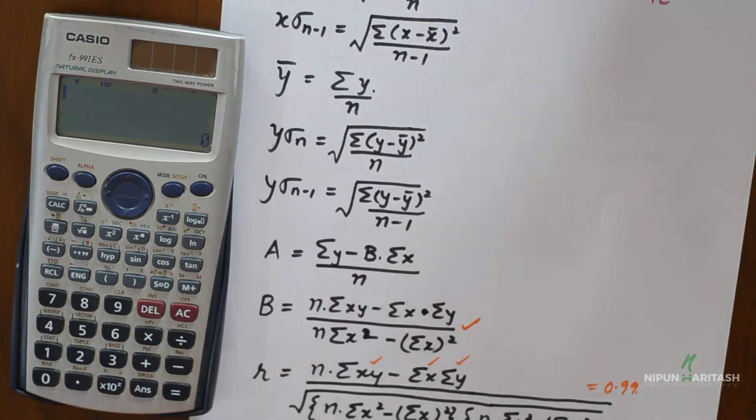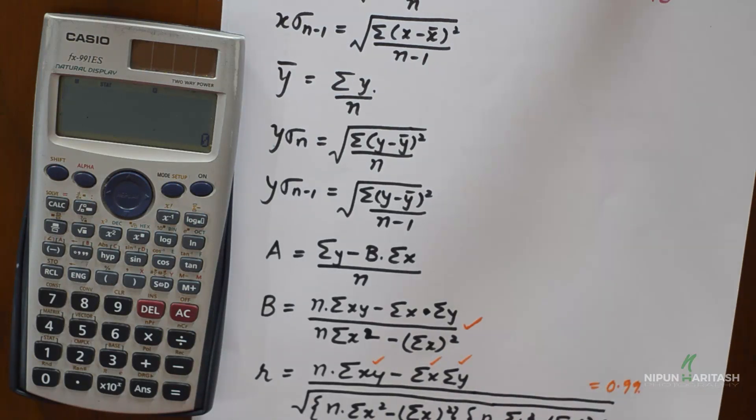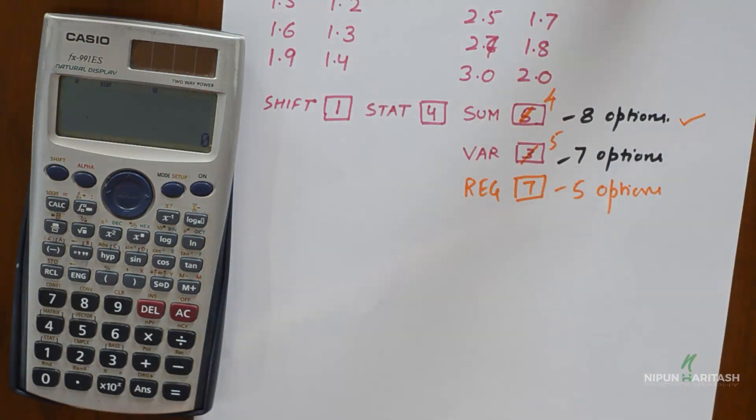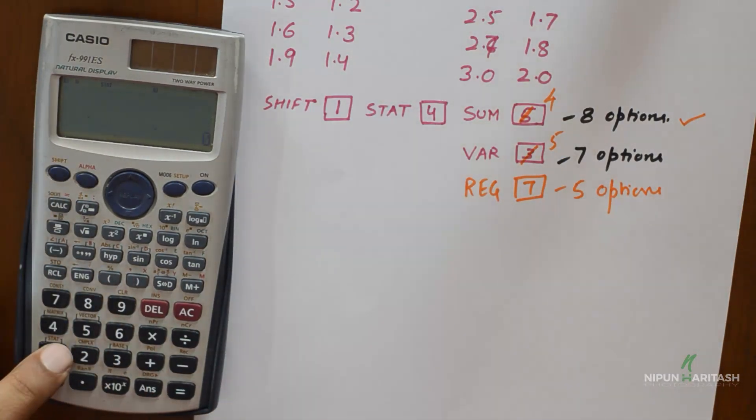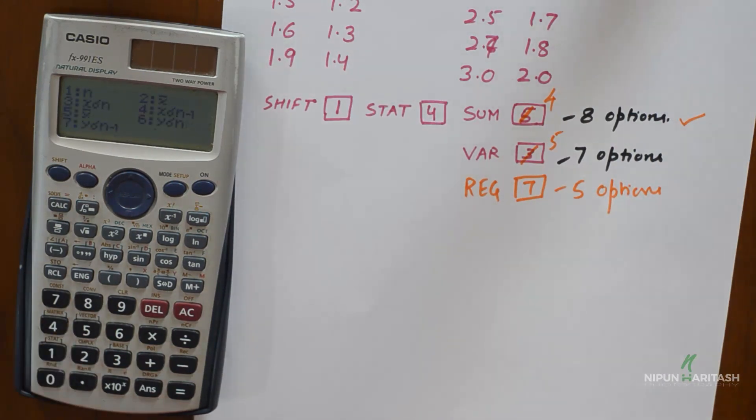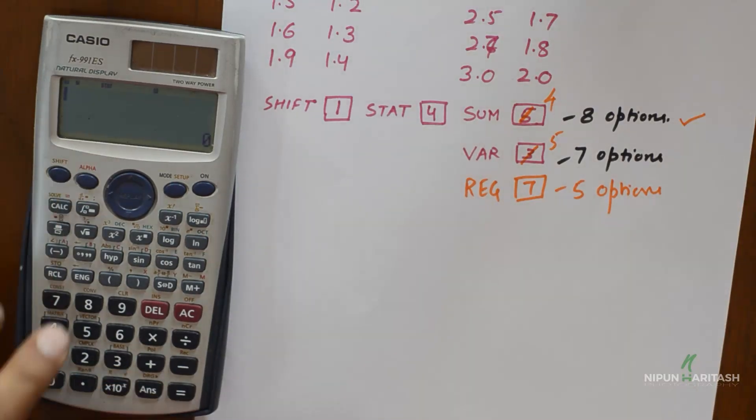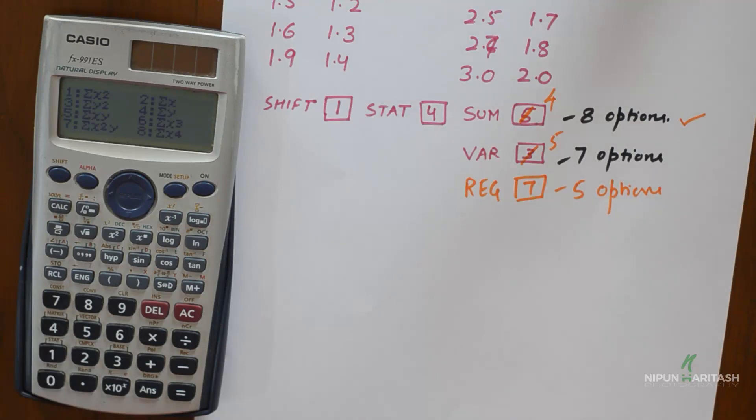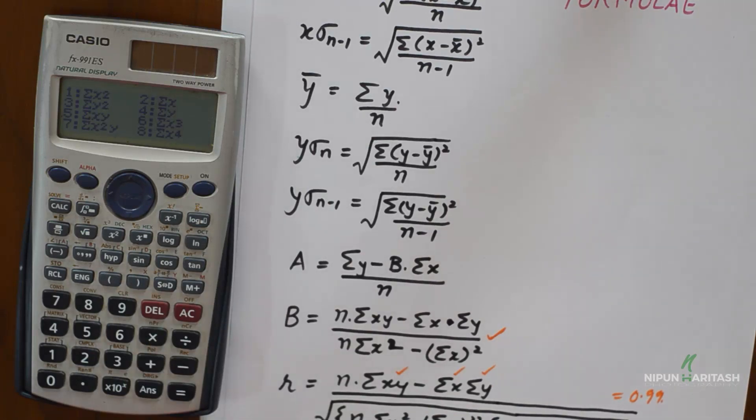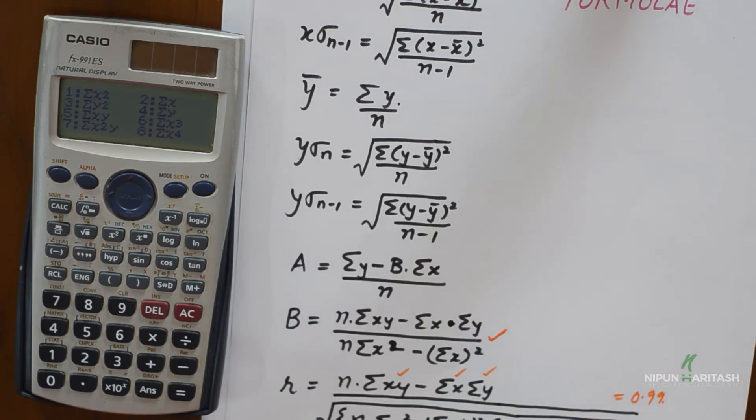The formula for regression coefficient is otherwise very very complicated and could lead to a manual error. Now similarly you can calculate other things by going to shift stat and you could press 5 for numerous other options and if you want to do manual calculation and then put the values in the formulas you can go to shift stat and 4. There you can find summation of x square, summation of x, summation of y square, summation of y, summation of xy, summation of x cube, summation of x square y, summation of x raise to the power 4 which can be used in these final formulas.